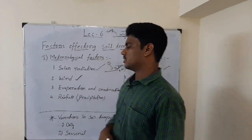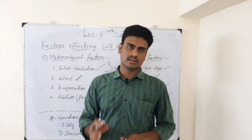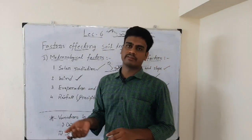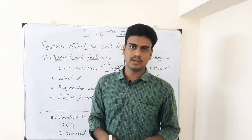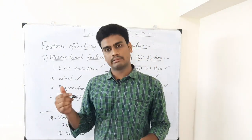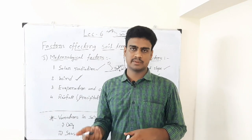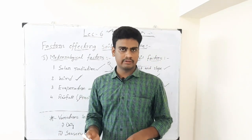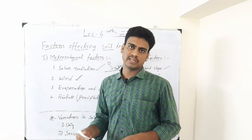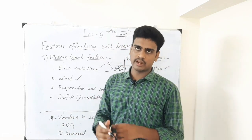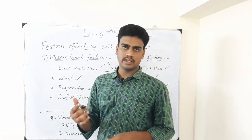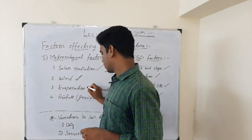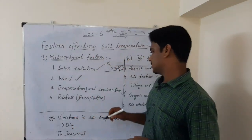The next factor is evaporation and condensation. Evaporation means loss of water from the surface of the soil. In a cropped field after irrigation, we see evaporation as well as transpiration - together called evapotranspiration. When evaporation takes place from the soil, it reduces the temperature of the soil - so when evaporation happens, soil temperature comes down.